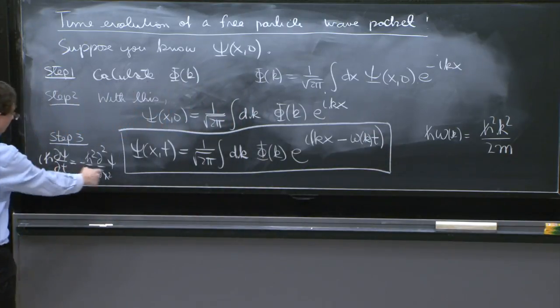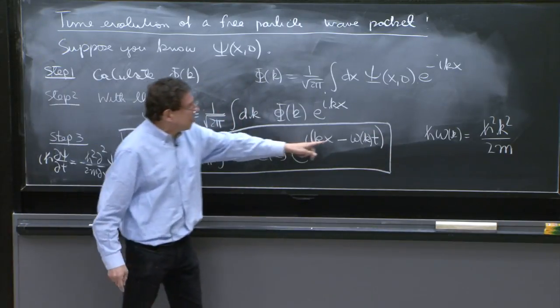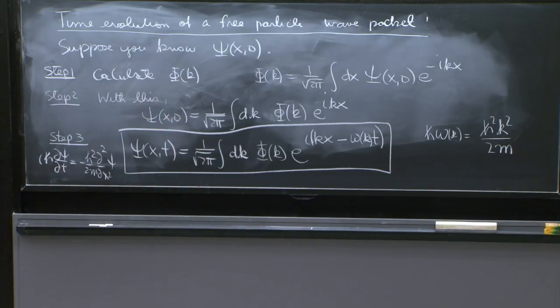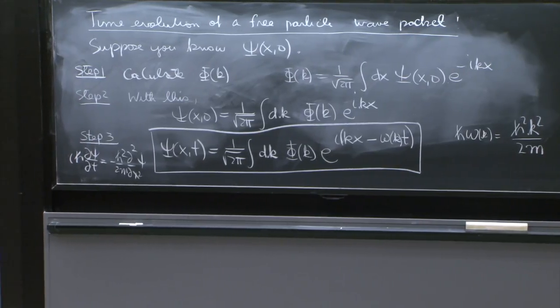And it solves this because it's a plane wave. So this thing, this ψ(x,t) solves the Schrödinger equation. It's a superposition of plane waves, each of which solves the free Schrödinger equation.